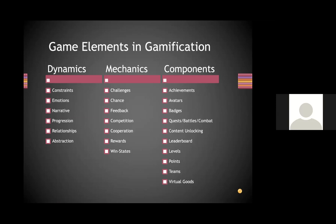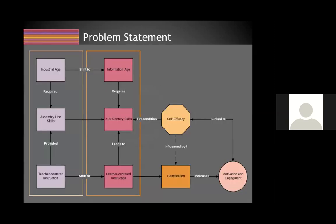Here is basically a list of what constitutes game elements that could be included in a gamification design: dynamics such as narrative or progression, mechanics like challenges and feedback, cooperation, rewards, and components including badges, quests, and leaderboards. This is the model I used to come up with some prescriptive nature for how to build a gamified course.